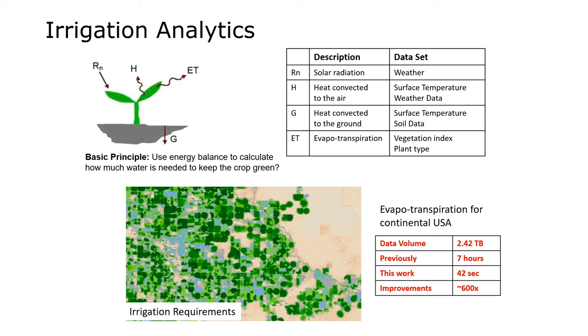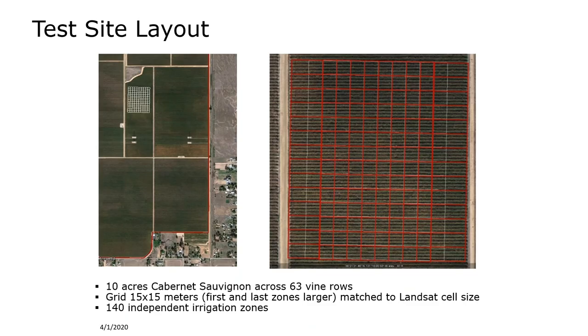The analytics aims to compensate for evapotranspiration (ET) by providing the right amount of water to each crop to maintain a certain balance at the plant level. You need weather information and satellite information, combine them both, and run calculations at a very large scale. Then you can translate that information into the amount of water required at individual locations, adjusting requirements based on spatial variation.